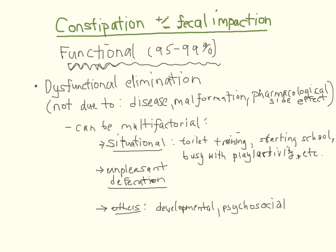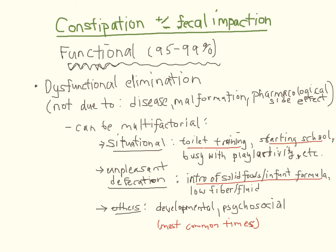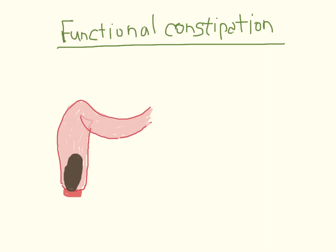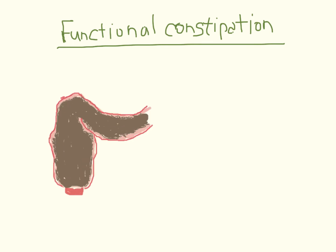Common situations include toilet training, especially when coercive and the child isn't developmentally ready, and the start of school, especially when clean private toilets are lacking or toilet use is regulated or restricted. Stools are more likely to become dry and small after the introduction of solid food or infant formula, or in children with suboptimal fiber or fluid intake. Any organic cause of constipation can also lead to withholding that persists after treating the organic cause. Regardless of the reason, the end result is stool retention. Retained stools become harder as more water is reabsorbed, then accumulate as new stool arrives. A mega rectum can form after constant and repetitive stretching, which now requires greater distention before an urge to defecate is generated, so the retention of large caliber stools becomes beyond one's control.